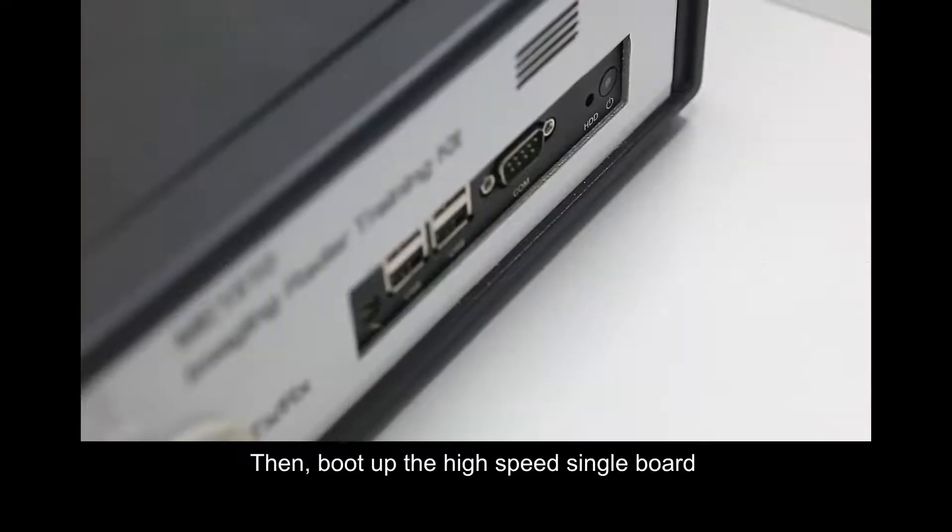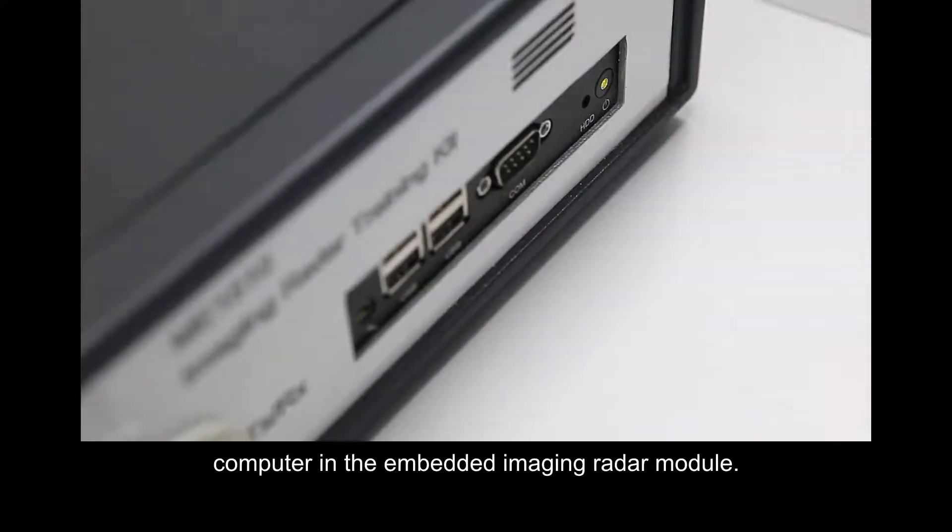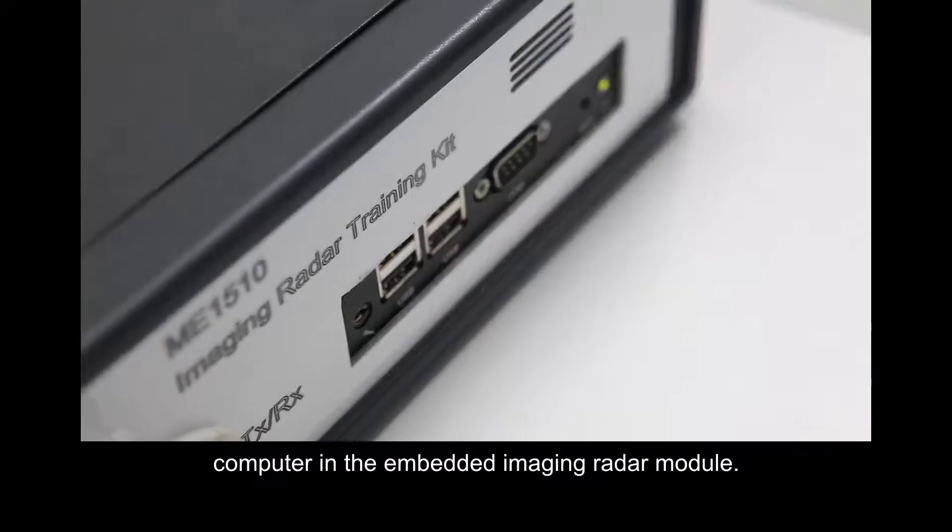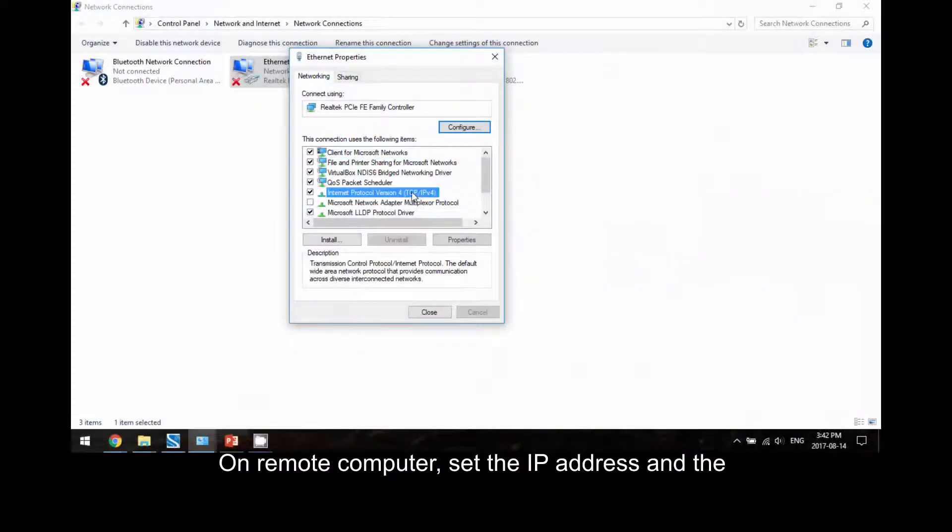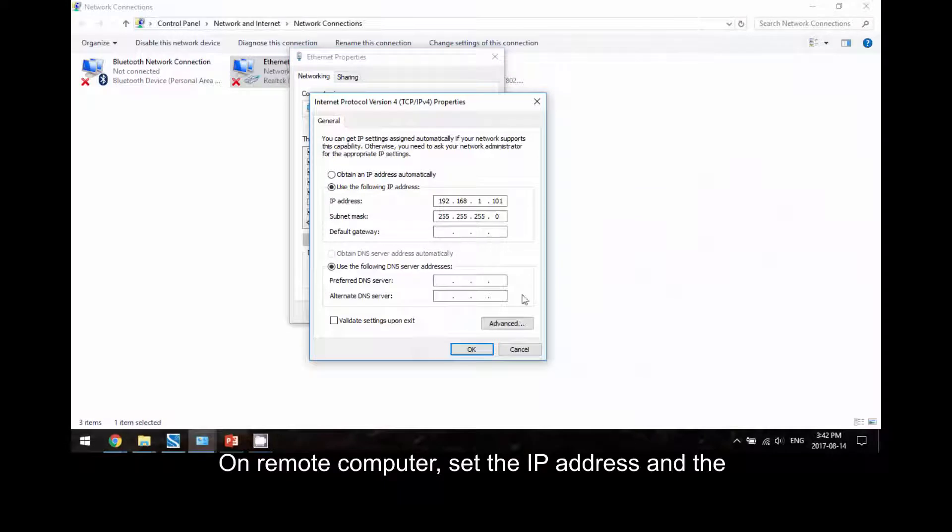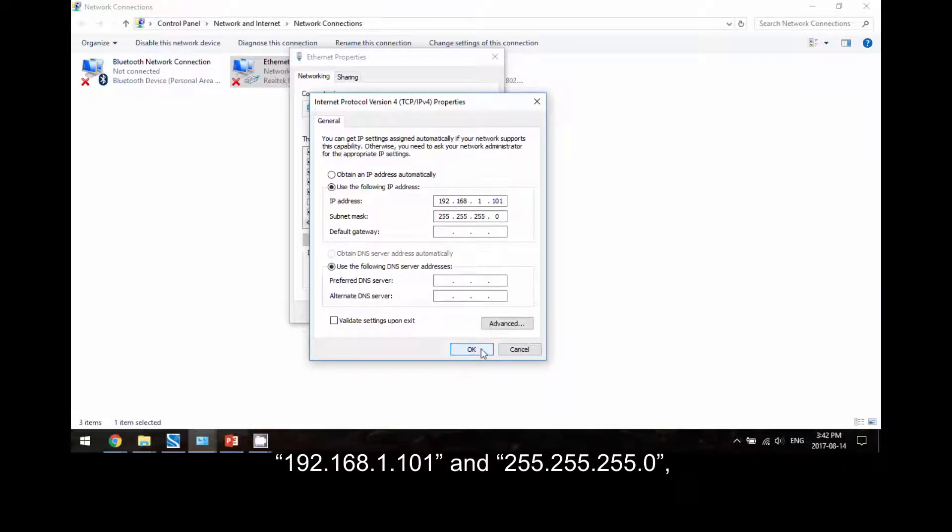Then boot up the high-speed single-board computer in the embedded imaging radar module. On the remote computer, set the IP address and subnet mask of the ethernet port to 192.168.1.101 and 255.255.255.0, respectively.